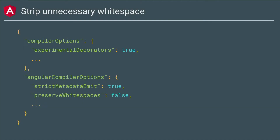The next step is an easy one: strip away white space when you do AOT compilation. All you have to do is go to your TS config, and in the Angular compiler options, set preserve white spaces to false. Right now it's true by default, but in Angular 6.0, it's going to be false by default — just something to keep in mind.